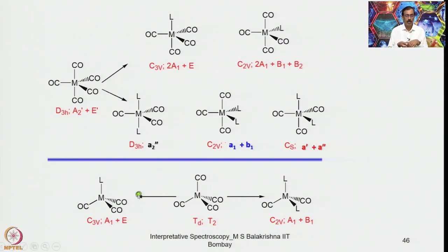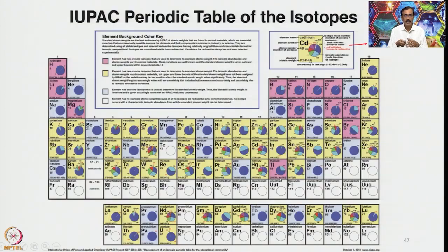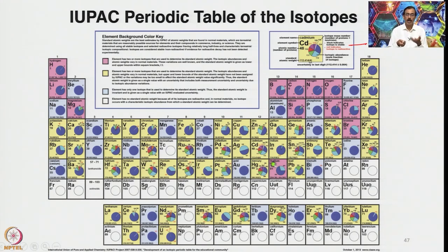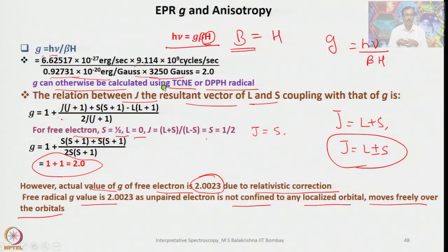A periodic table giving the natural abundance of different isotopes is very useful in characterizing compounds through mass spectrometry. In EPR, the important equation gives the g-factor: g = hν/(β_H × B₀), where for a free electron g_e = 2.0023. In EPR we consider both J = L + S and J = L − S, unlike electronic spectroscopy where only one combination is used.